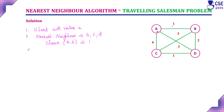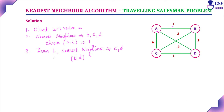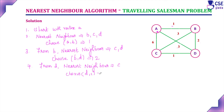Next, from B, the unvisited nearest neighbors are C and D. B to D costs 2, B to C costs 3. So we choose B to D with cost 2. Next, from D the only unvisited neighbor is C. We choose D to C with cost 1.